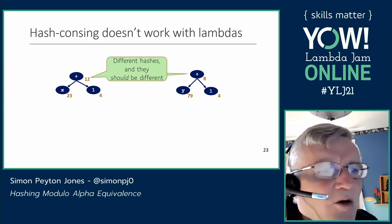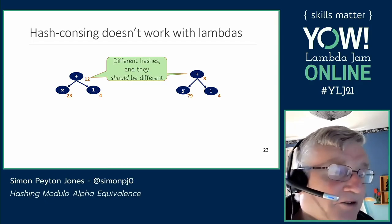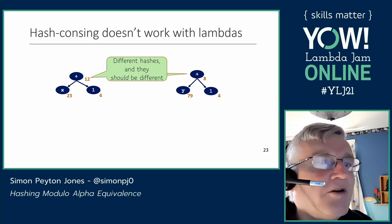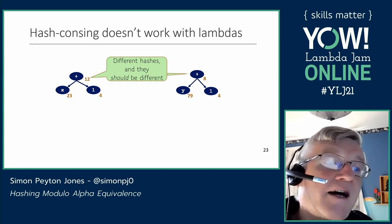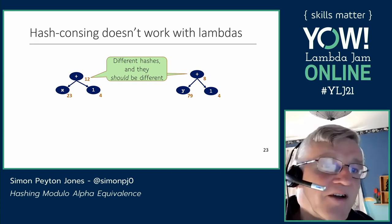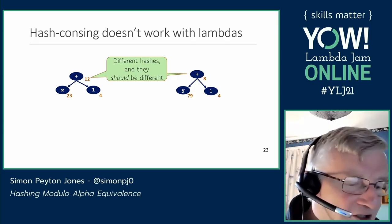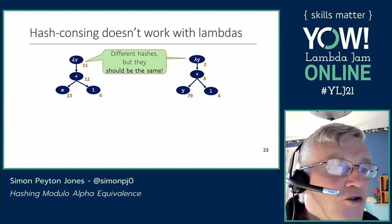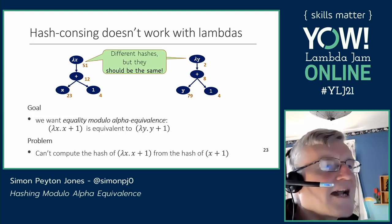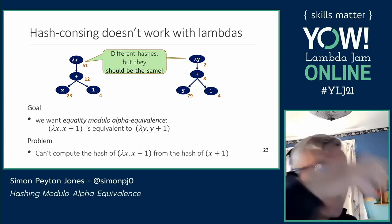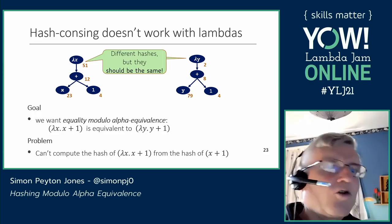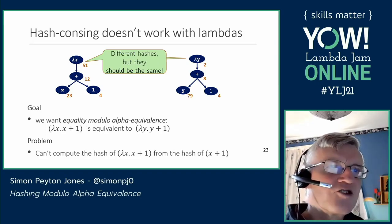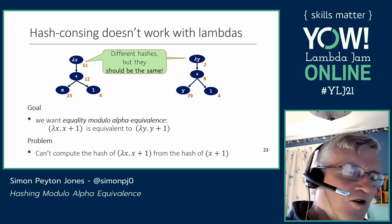Here's an example: x plus one and y plus one have different hashes — x and y are different nodes with different hashes. The hash of x plus one might be 12 and of y plus one might be 8. They are different terms. But if we stick a lambda on top, this time we want them to be the same. It's not simple to compute the hash of lambda x, x plus one from the hash of x plus one, as you'd have to look at the whole term again. This is why hash consing doesn't work straightforwardly with lambdas — it has false negatives.